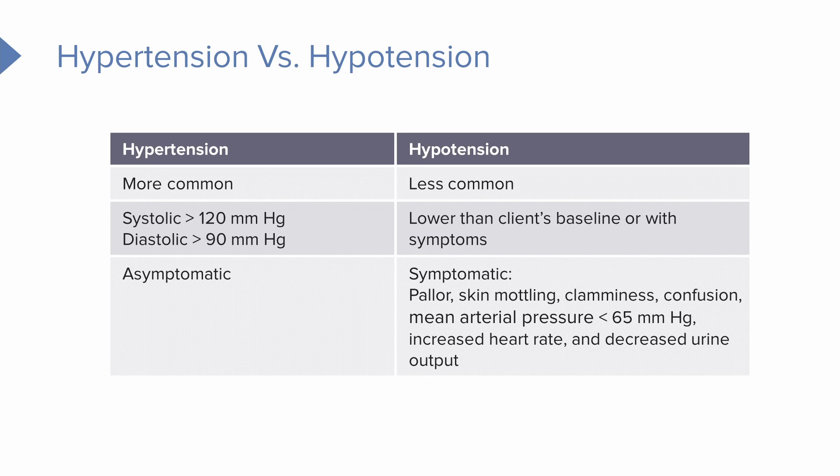With hypotension, patients are typically much more symptomatic. They can experience pallor, clamminess, and confusion. If blood pressure is too low, the heart triggers a response — it starts beating faster to increase heart rate. If there's not enough blood volume going to the organs, it can also affect the kidneys and decrease urine output.